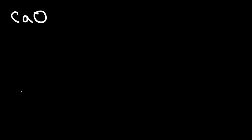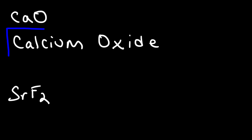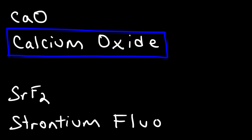Try these two ionic compounds: CaO and SrF₂. Ca is calcium and O becomes oxide, so the answer is calcium oxide. Sr is strontium and F becomes fluoride, so this is strontium fluoride.